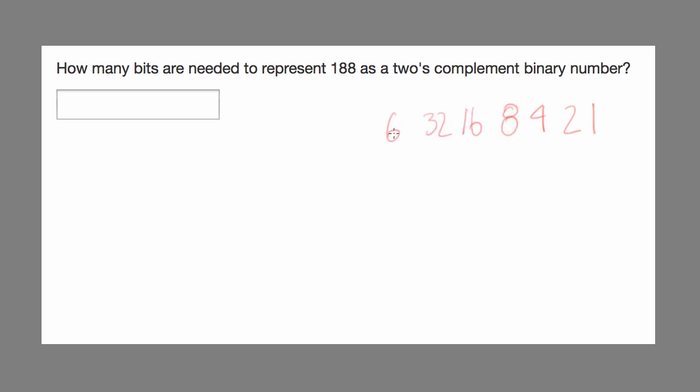We can keep writing these until we get to one that's larger than the number we're trying to represent. So we know that with these bits—bits 1, 2, 3, 4, 5, 6, 7, and 8—8 bits is enough to represent 188 as an unsigned number.